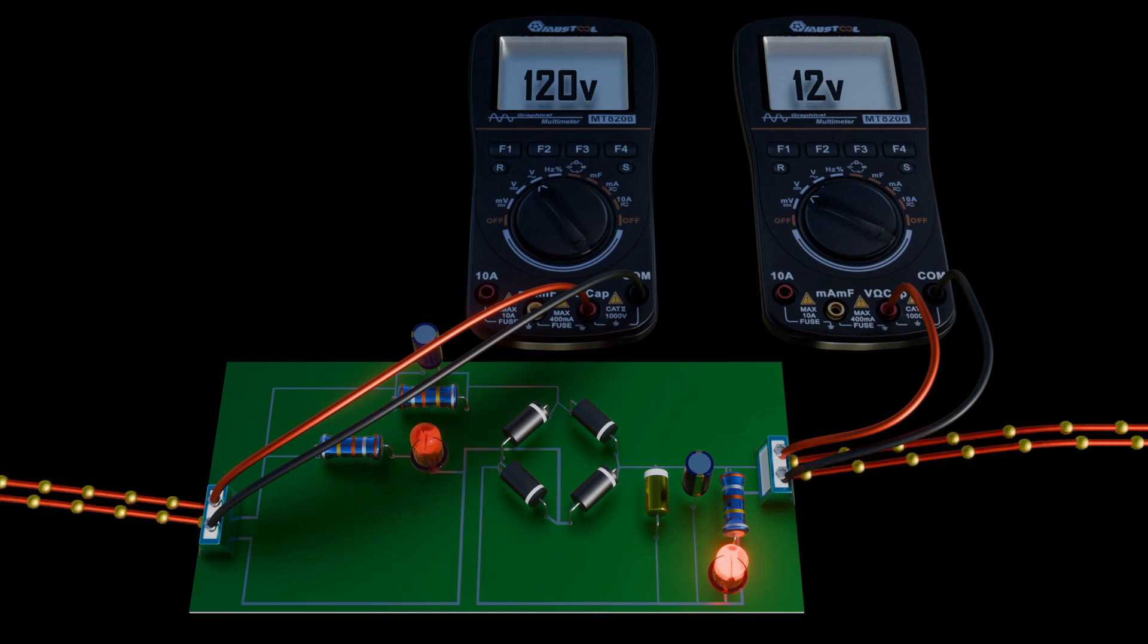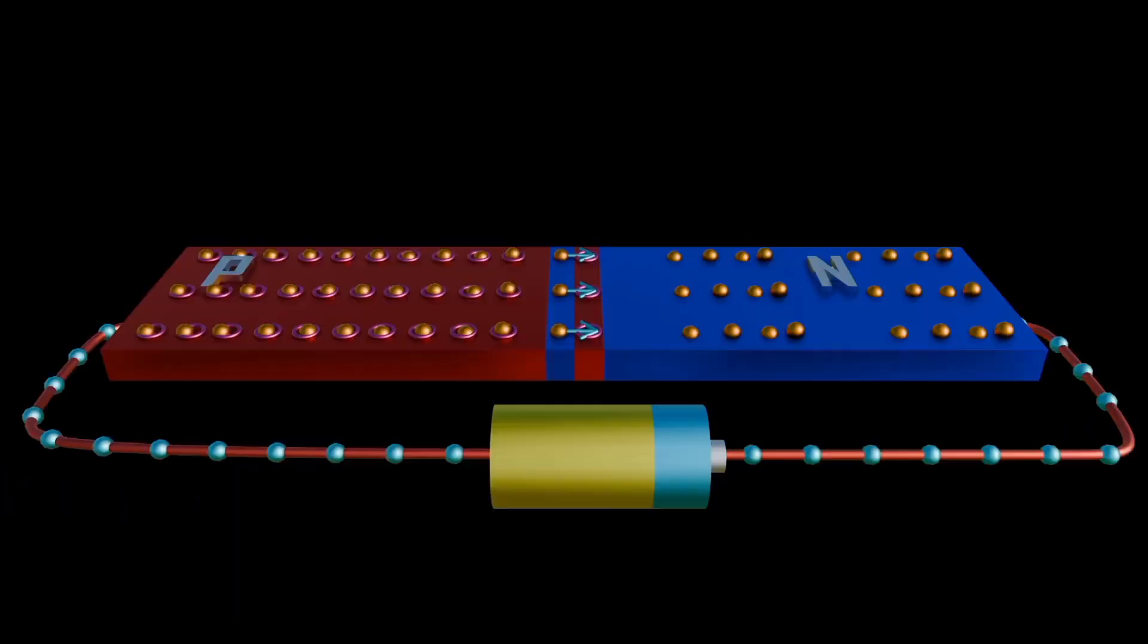This voltage regulator can be used to produce a very stable voltage output with very low ripple under varying load. By the help of Zener diode, we can easily stabilize the output voltage of the load.